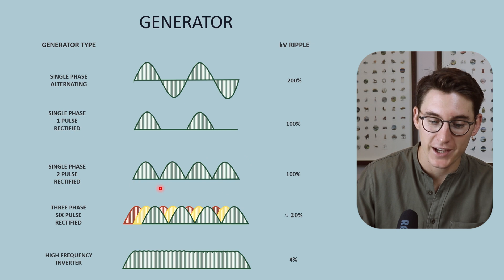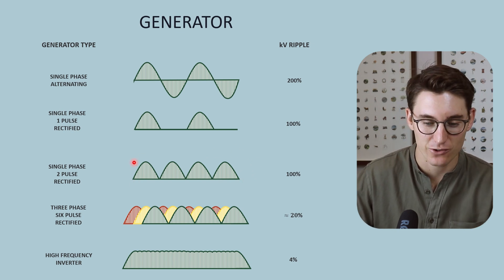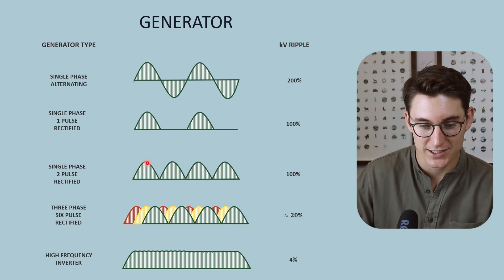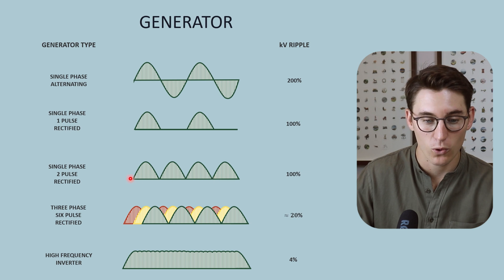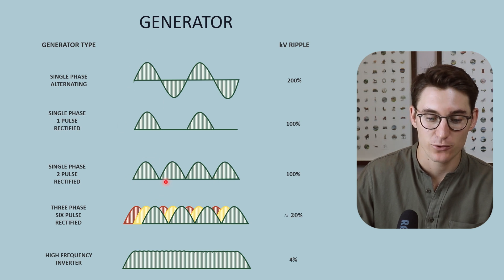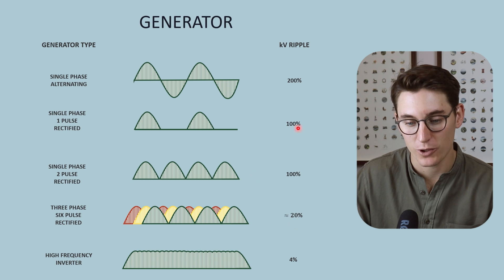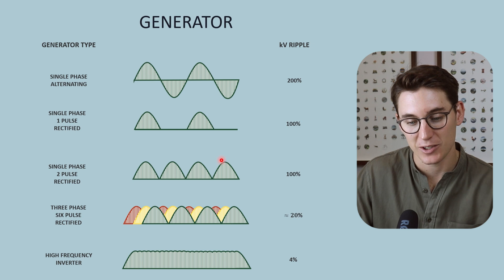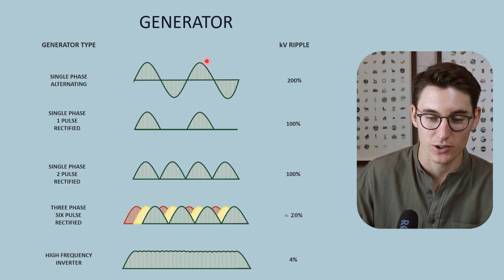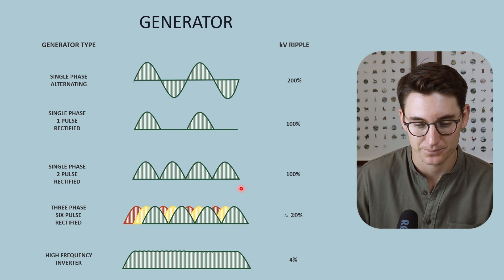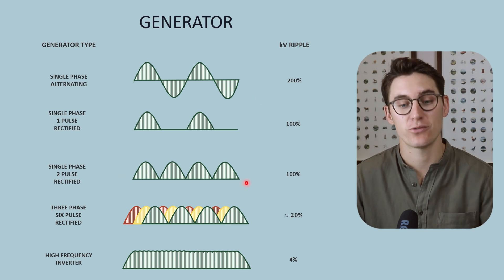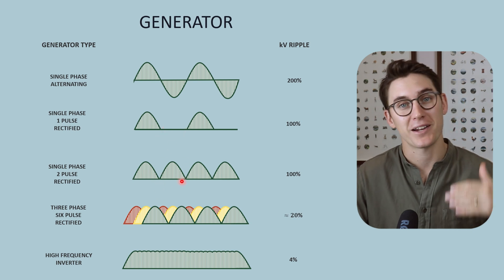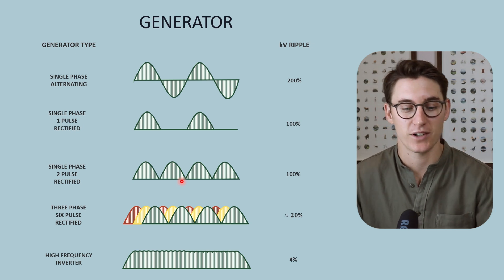Full wave rectification, as we looked at with the full wave rectifier in the secondary transformer, gives us single phase current with two pulses per cycle that have been rectified. Our KV ripple is still 100% because we still have periods of zero voltage, with kVp values the same as our single phase alternating current. We now have a more consistent flow of current without prolonged periods of no flow, but the ripple is still 100% and the current is still fluctuating.